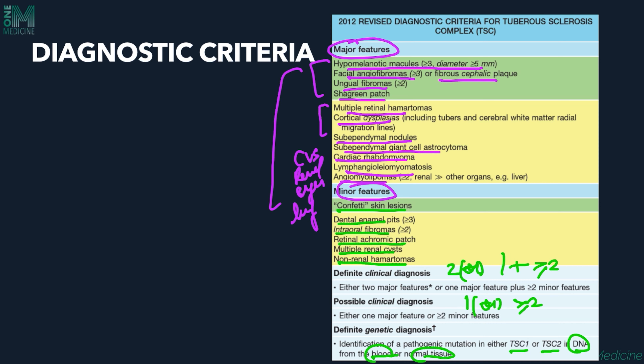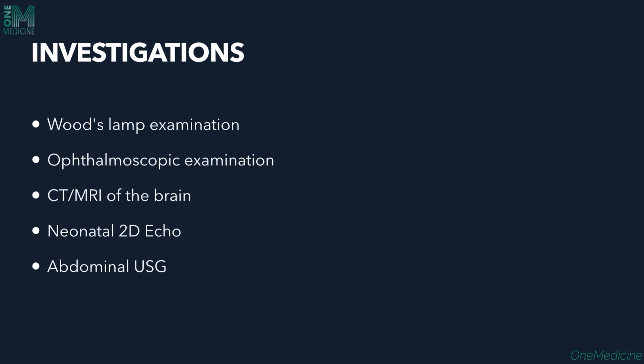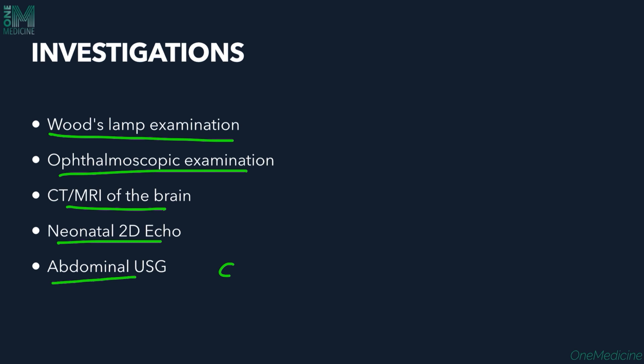For a possible diagnosis, one major or ≥2 minor criteria suffice, or TSC1/TSC2 mutations detected in blood or normal tissue. Investigations include Wood's lamp examination for hypopigmented macules, ophthalmoscopic examination for retinal hamartomas, CT/MRI of the brain for subependymal giant cell astrocytomas and cortical tubers, neonatal 2D echocardiography for rhabdomyosarcoma, and abdominal USG or CT/MRI for renal lesions.